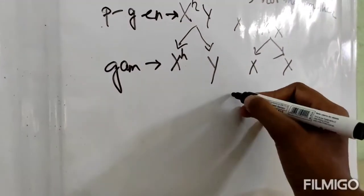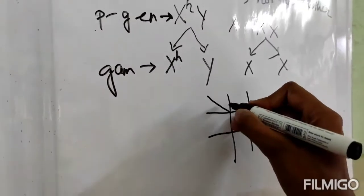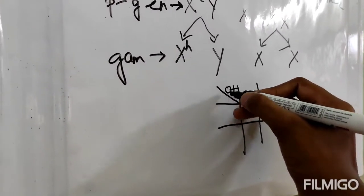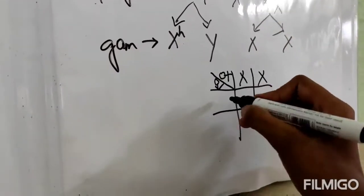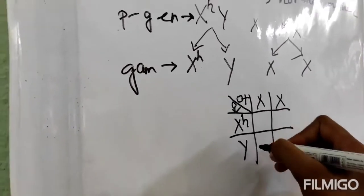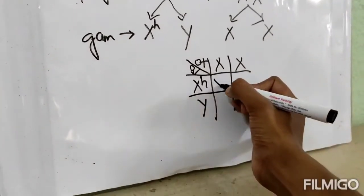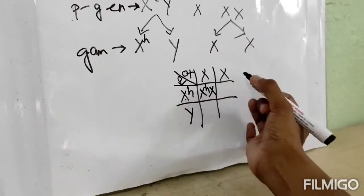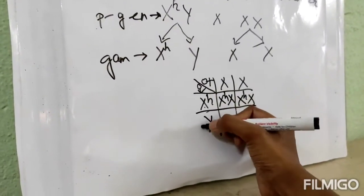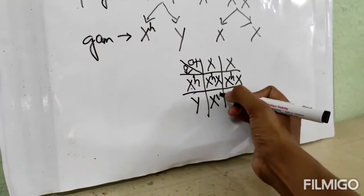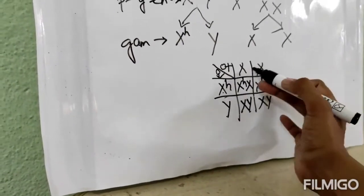Now we will do the checkerboard to find out the probability. Over here we are taking the mother, that means X-X, and the father is X^H-Y. We will multiply X^H with both X's from the mother, giving X^H-X and X^H-X. Then we will multiply Y with both X's, giving X-Y and X-Y.